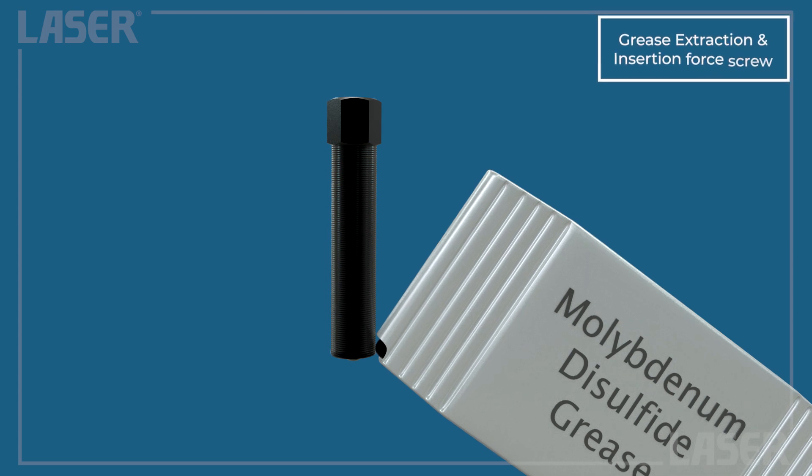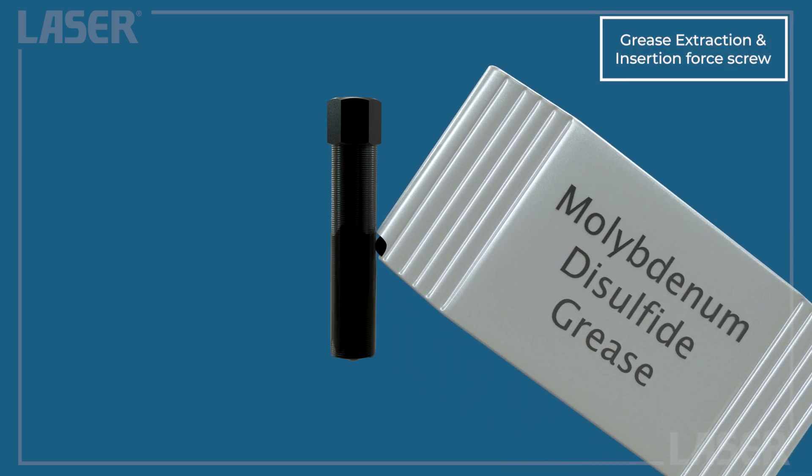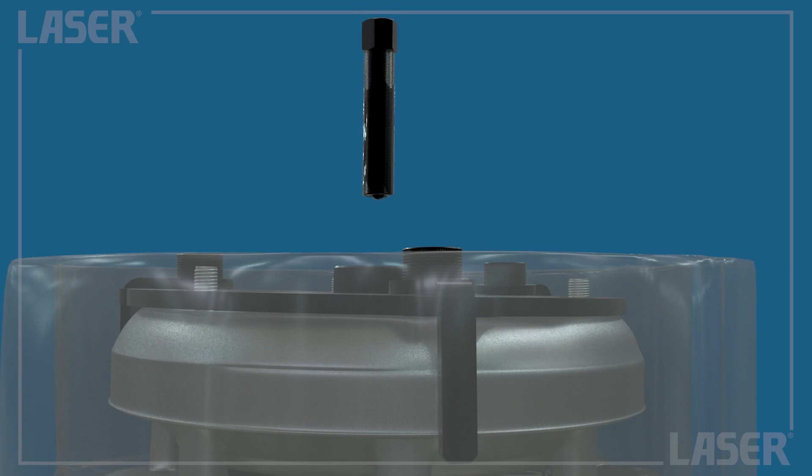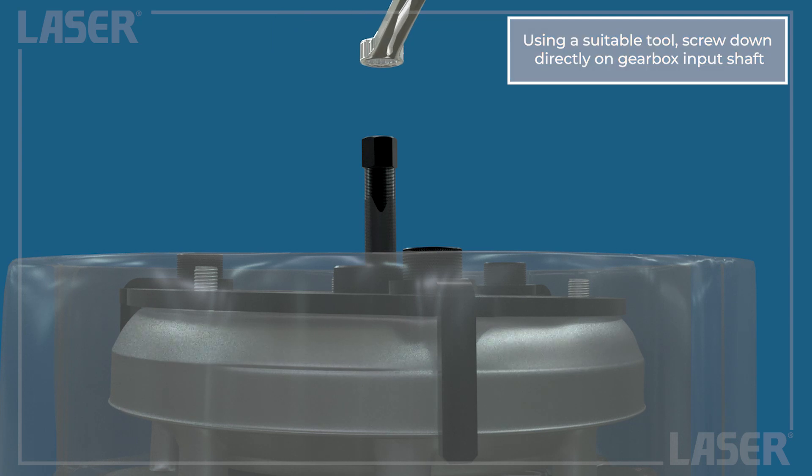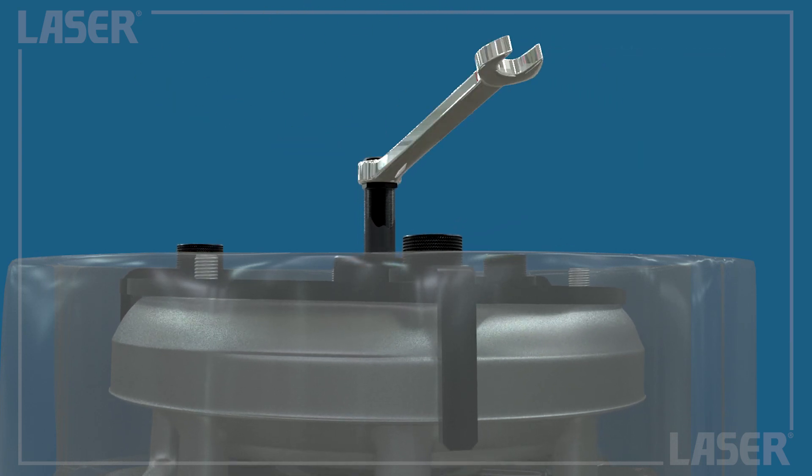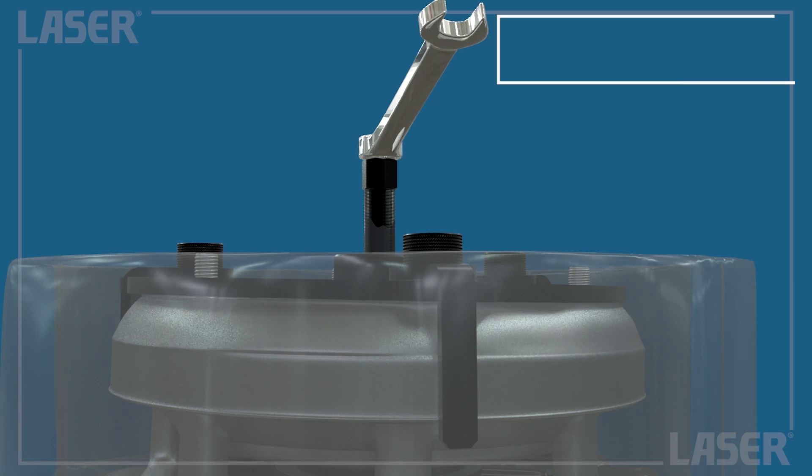Always remember to lubricate the force screw with molybdenum disulfide grease. Screw in the force screw, which pushes down directly on the input shaft. This pulls the clutch pack up to allow the whole assembly to be moved clear.